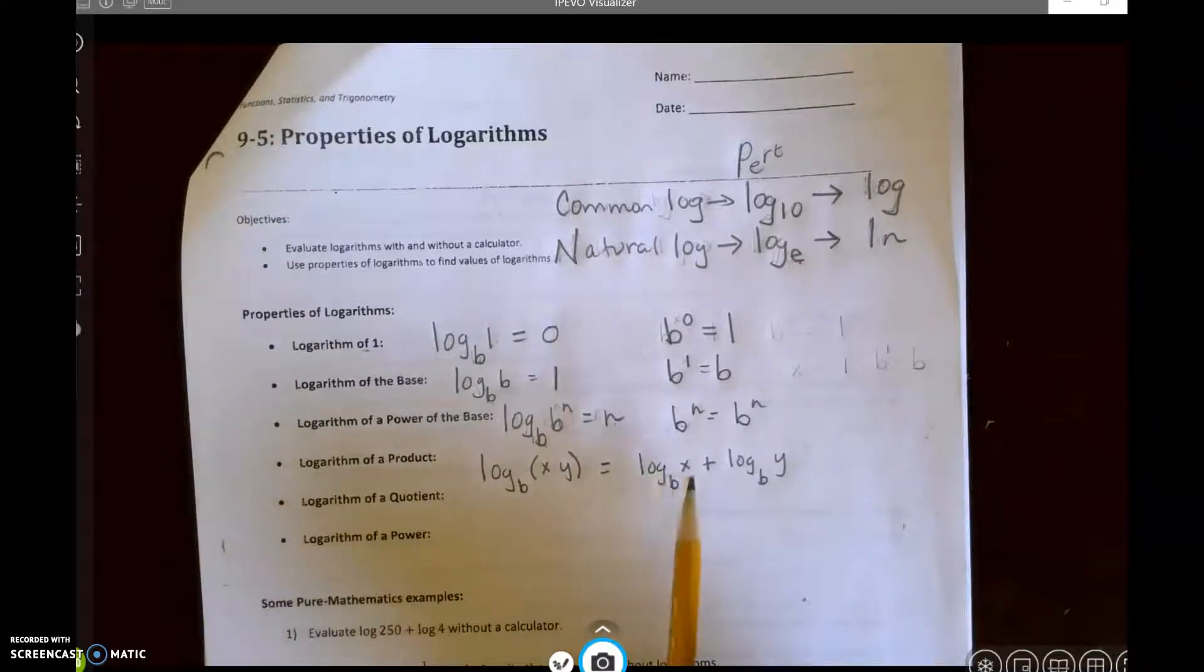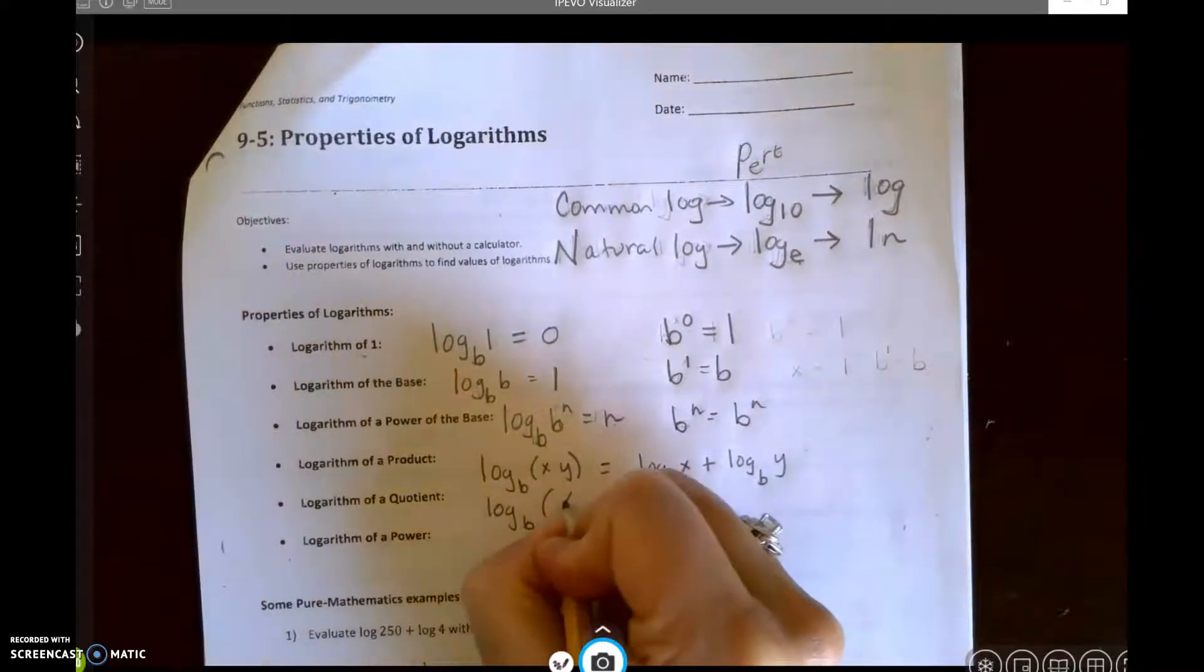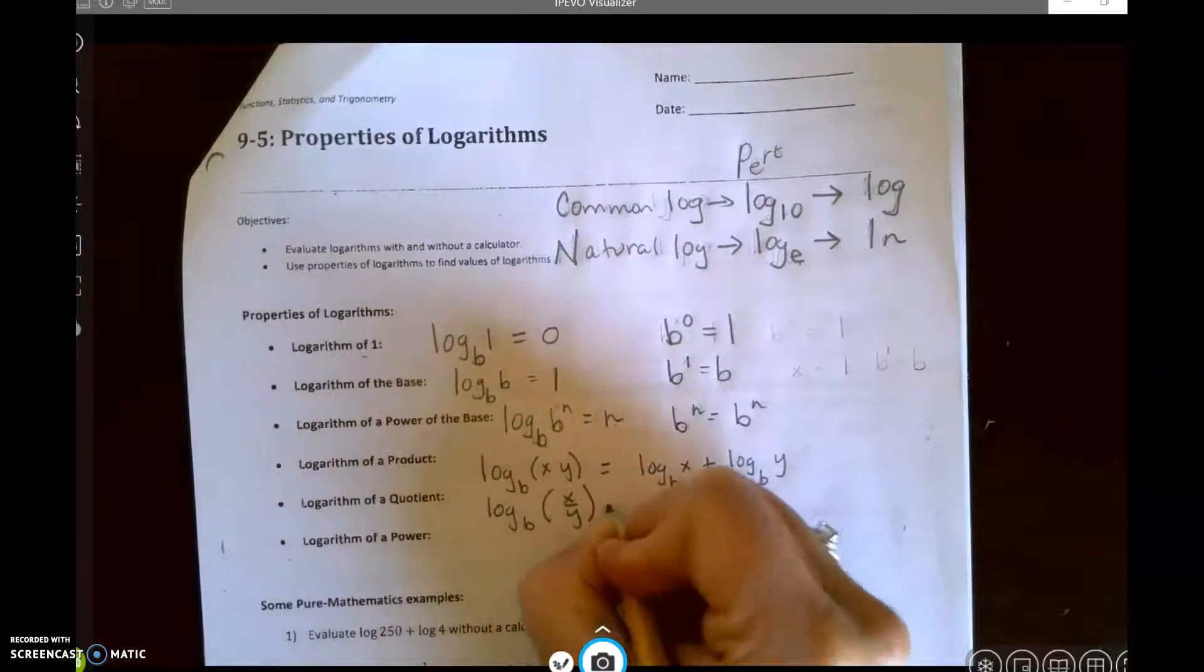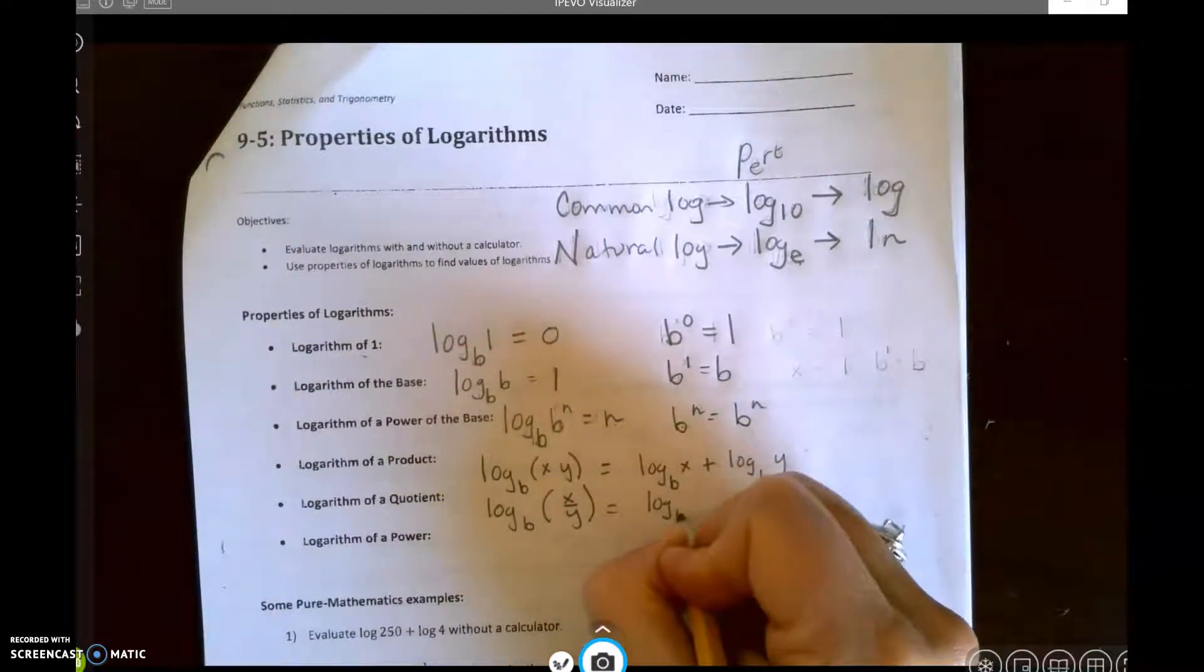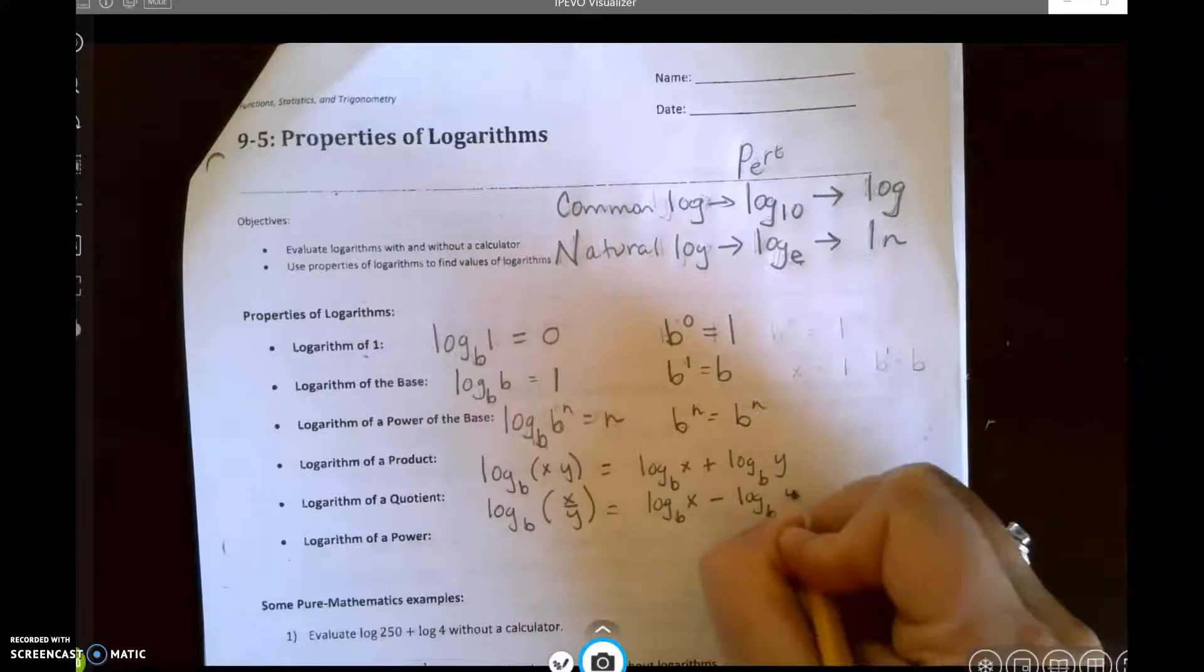Kind of like with exponents and radicals. If it's in radical form, write it in exponent form. If it's in exponent form, write it in radical form. If it's condensed, expand. If it's expanded, condense.